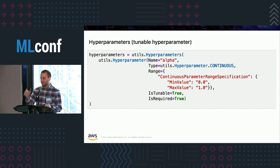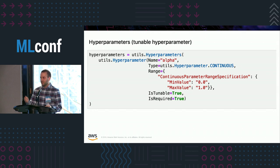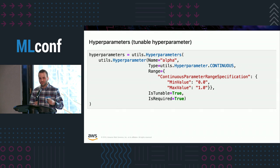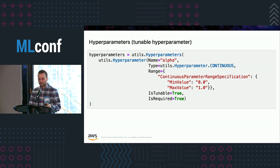Let's jump into the hyperparameter, which is the first interface. We have alpha, ranging from 0 to 1, so it's a floating point value and it's continuous. We mark it as tunable because it affects the model's error, and we also mark it as a required hyperparameter.